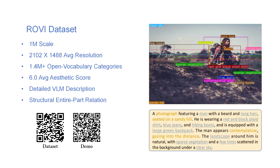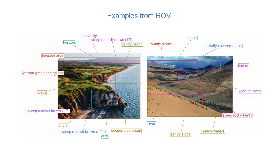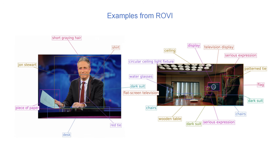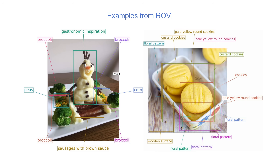Therefore, we present RoVe, a large-scale dataset of 1 million high-quality images with over 1.4 million open vocabulary categories — two orders of magnitude more than existing datasets. RoVe features a novel pre-detection recaptioning strategy, where VLMs generate detailed visual descriptions and LLMs extract structured category lists. This enables multi-OVD fusion that previous methods couldn't achieve, while remaining fully reproducible with open-source models.